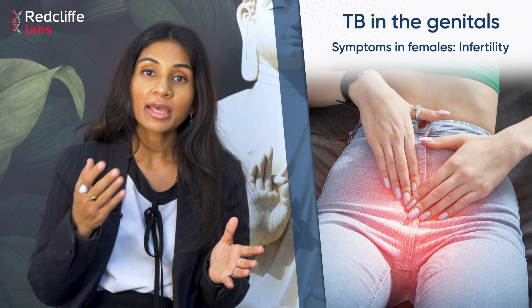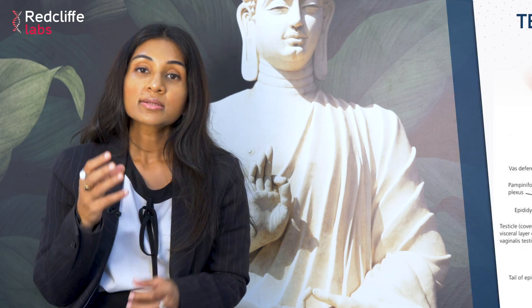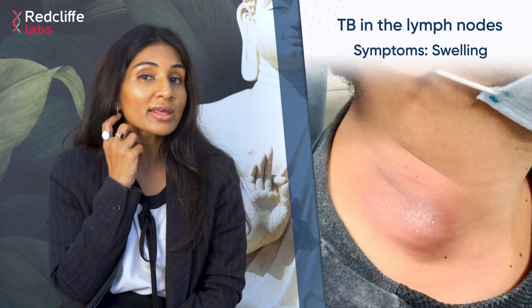A lot of times a young female can present with infertility — not being able to conceive. The most common cause of primary infertility in India is still tuberculosis, and it is treatable and curable. In men, there can be a painless, gradually increasing swelling of the scrotal or genital region, which can also be due to TB. Another common manifestation is swelling of the lymph nodes.